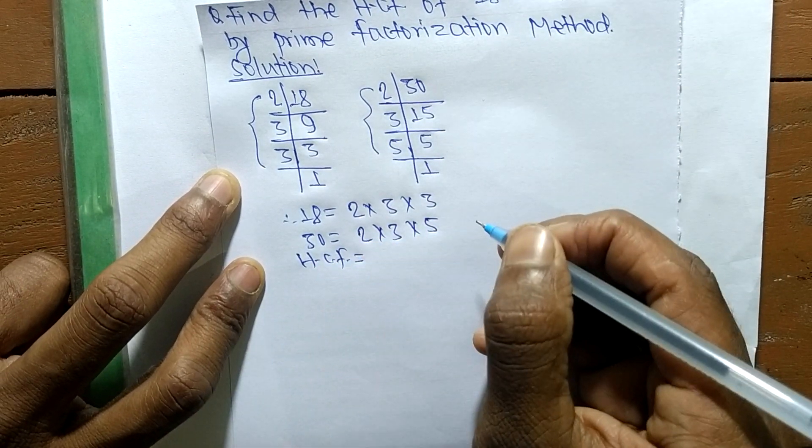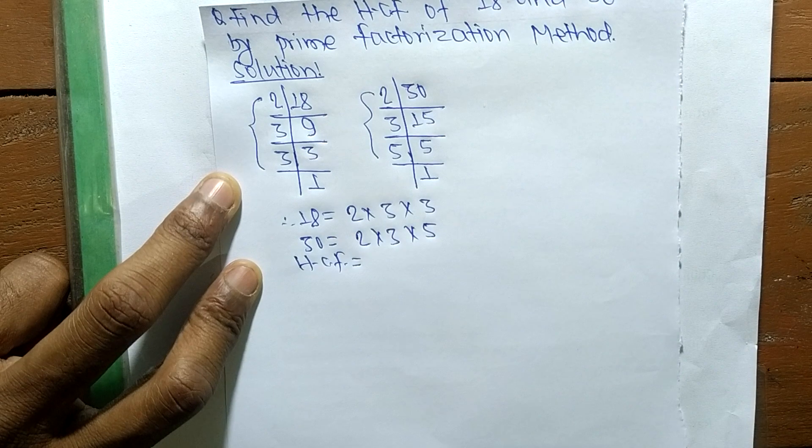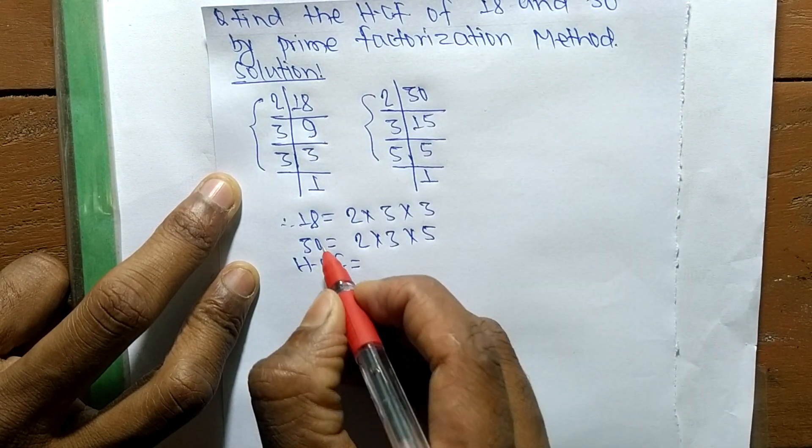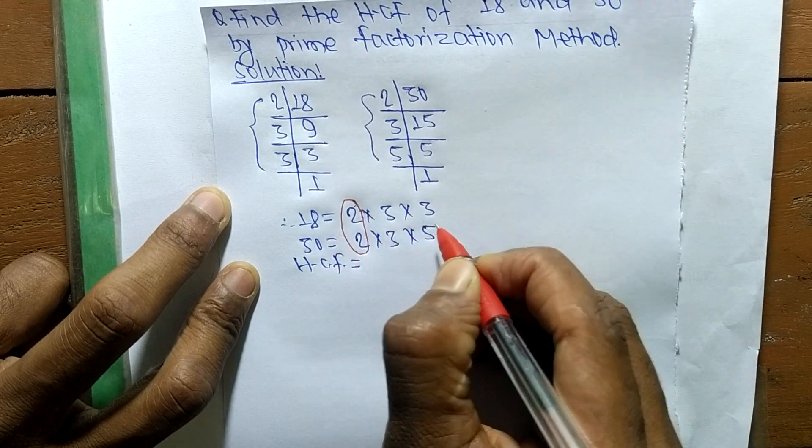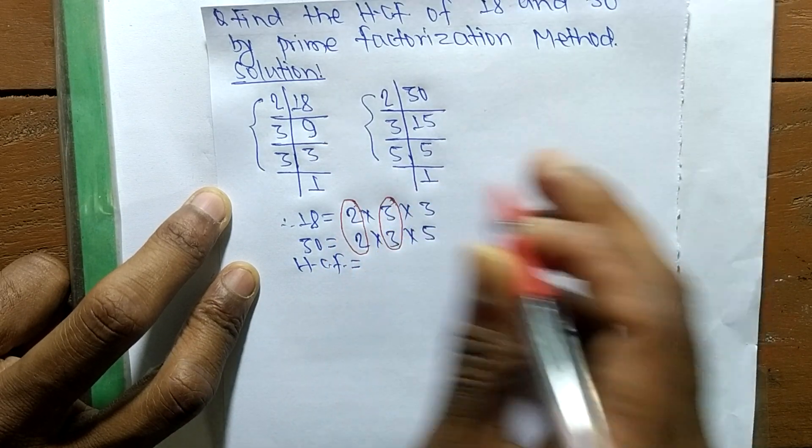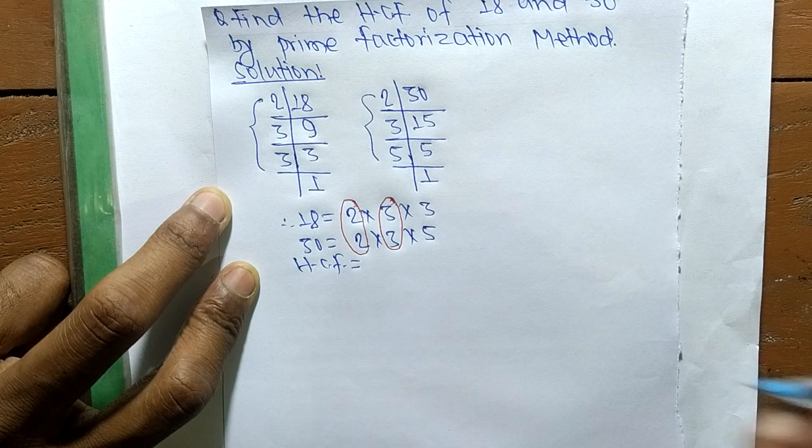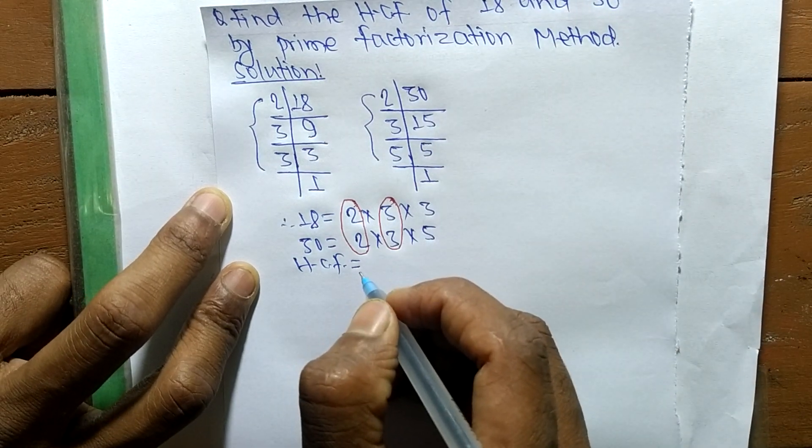The HCF is found by identifying the common factors in the prime factors of 18 and 30. The first common factor is 2, and the second one is 3.